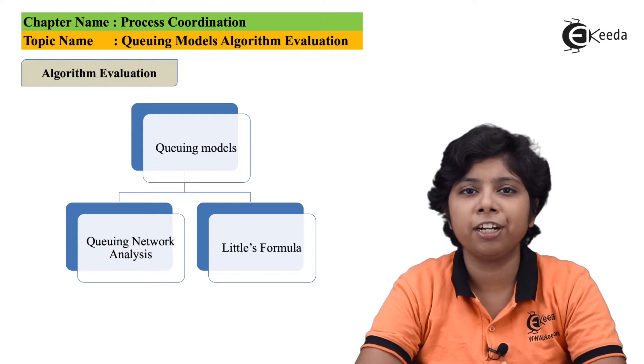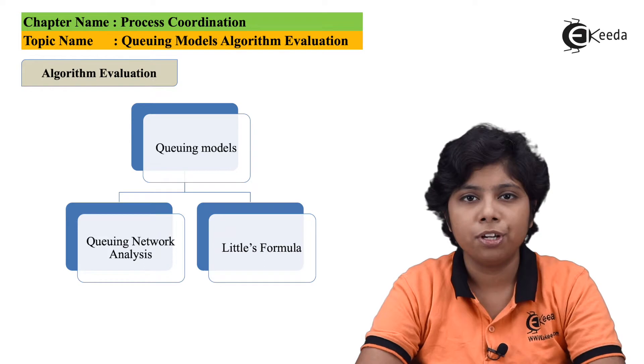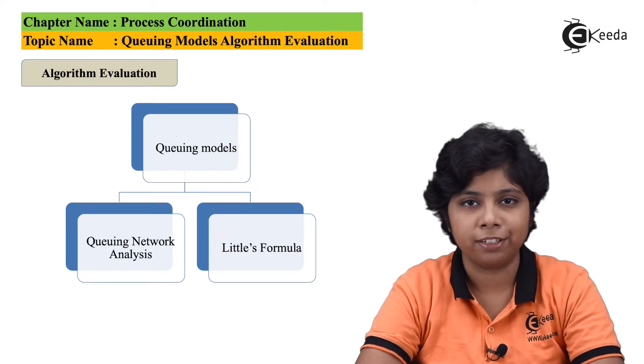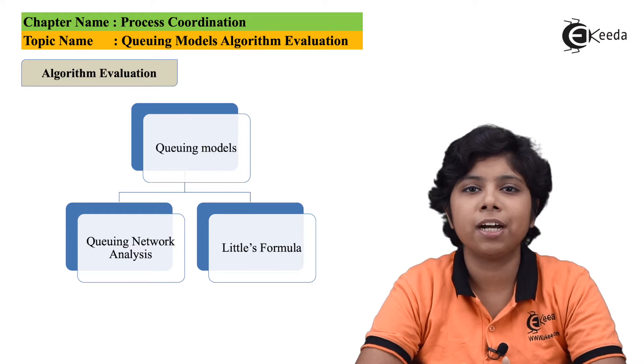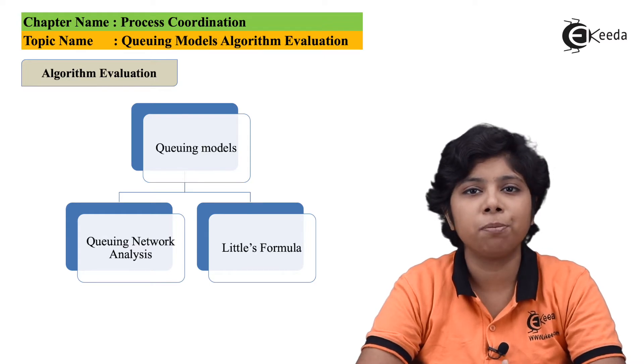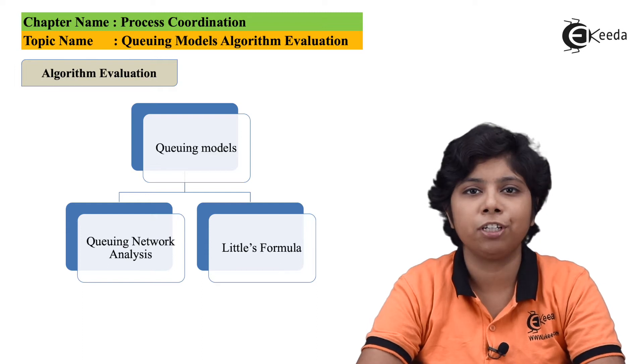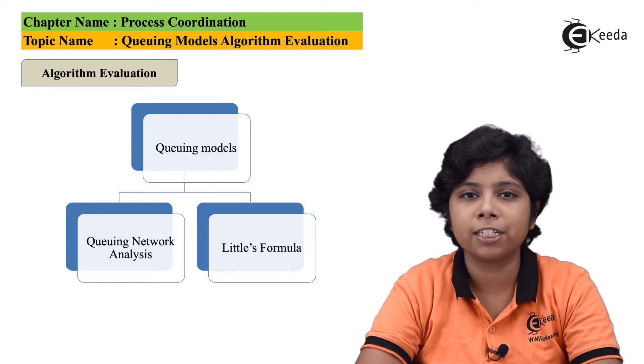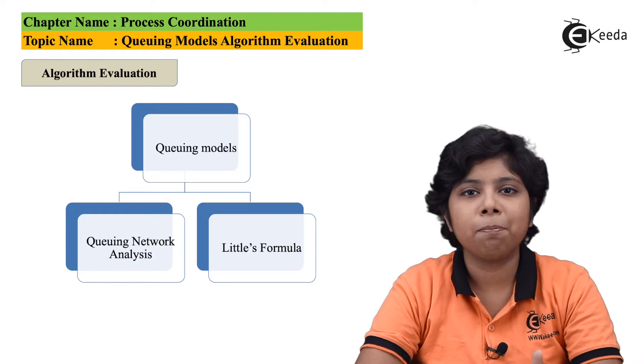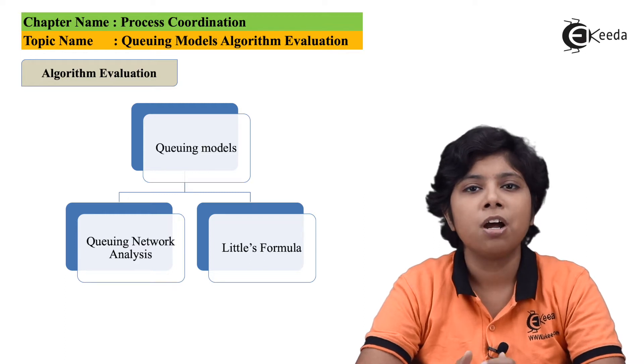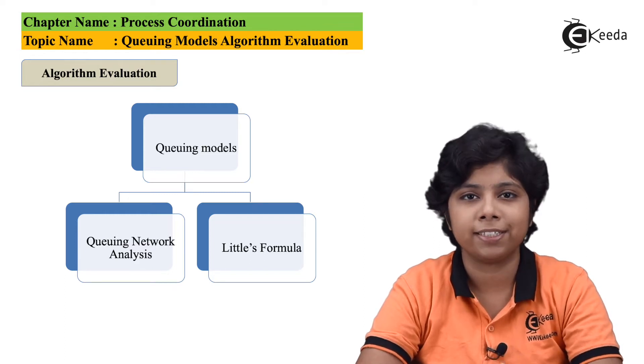Now, suppose consider that if there are n number of processes waiting in the queue except the number of processes that is actually servicing, and w is the average waiting time for the processes, and lambda be the average arrival rate for the processes, say 3 processes per second. Then, by the time w that the process is busy waiting, lambda into w times of number of processes can arrive at the system.